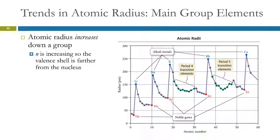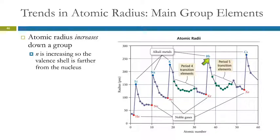So there are trends in atomic radius. We're going to look at trends vertically and horizontally in the periodic table. As you go down a group — like lithium, sodium, potassium, rubidium, cesium, all in group 1A — we observe that the atomic radius gets larger. So cesium is larger than rubidium, and lithium is smaller than sodium. It is not a linear trend, but it is a trend.